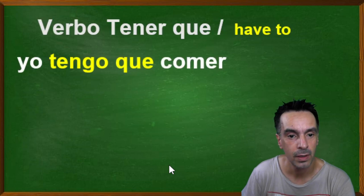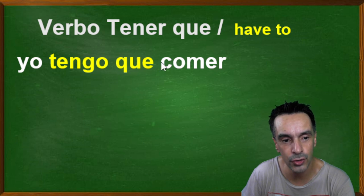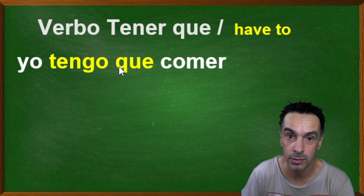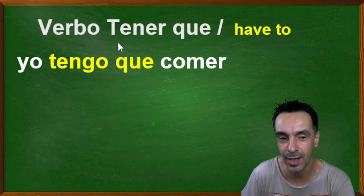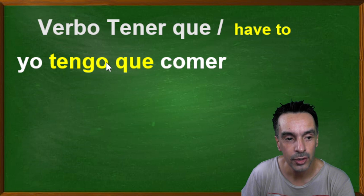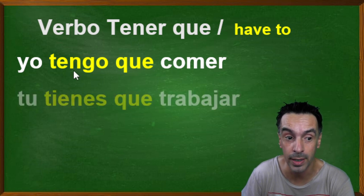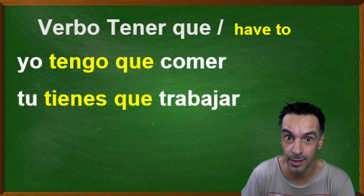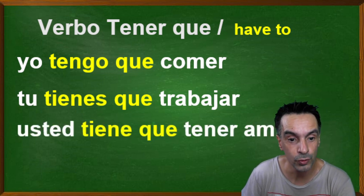Now let's continue. I'll show you how to use 'have to.' You generally use 'tengo que' plus a verb. For example, yo tengo hambre, or yo tengo que comer — I have to eat. Tú tienes que trabajar — you have to work.